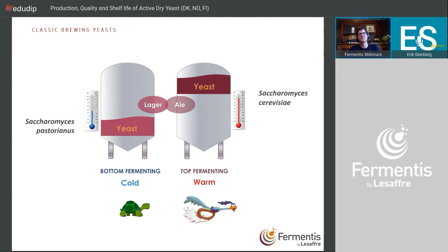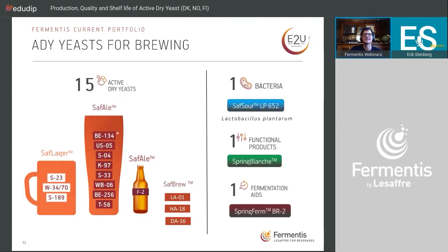Two yeasts important for brewing: Saccharomyces pastorianus, the lager yeast — bottom fermenting, prefers colder conditions and for this reason is quite slow — and Saccharomyces cerevisiae, the ale yeast — top fermenting, prefers warmer conditions. Fermentis currently has 15 active dry yeasts in the portfolio: 3 lager yeasts and 12 ale yeasts. I'll discuss many of them during the webinar cycle, with special focus on LA01 for low-alcohol and DA16 for brut IPA.